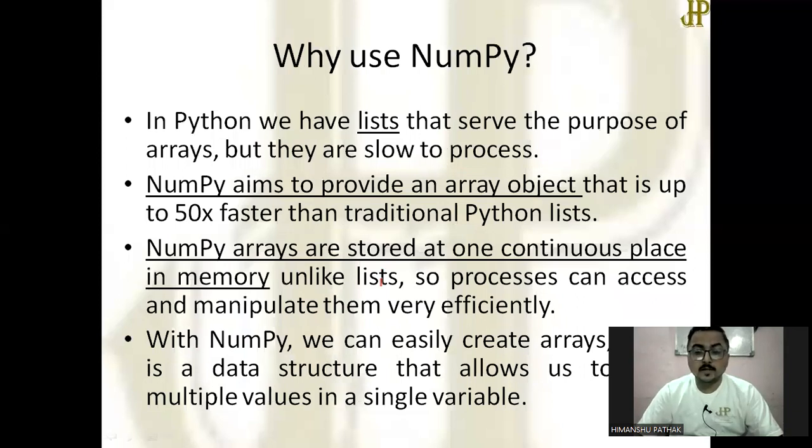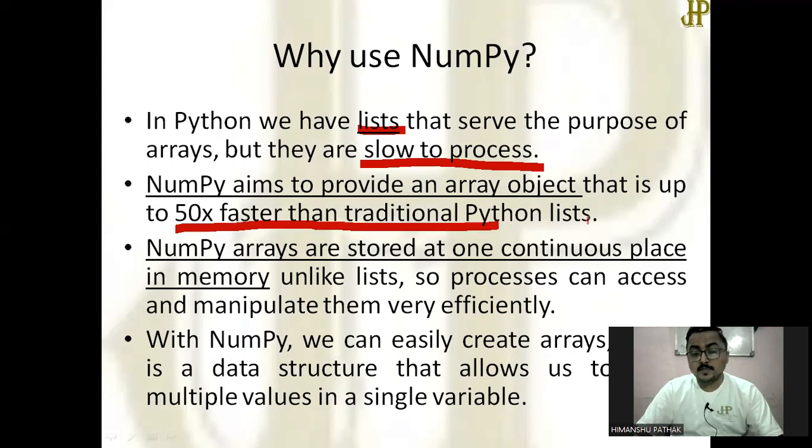Why we use NumPy? If we already have list data type through which you can create a similar type of an array, why is there another thing to serve an array? There are some basic differences between list and NumPy array. In list, it is slow to process. But in NumPy array, they are 50 times faster than Python list.